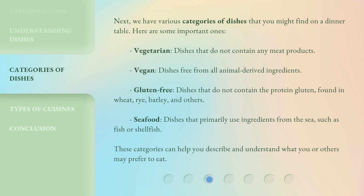Next, we have various categories of dishes that you might find on a dinner table. Here are some important ones. Vegetarian: dishes that do not contain any meat products. Vegan: dishes free from all animal-derived ingredients. Gluten-free: dishes that do not contain the protein gluten, found in wheat, rye, barley, and others. Seafood: dishes that primarily use ingredients from the sea, such as fish or shellfish. These categories can help you describe and understand what you or others may prefer to eat.